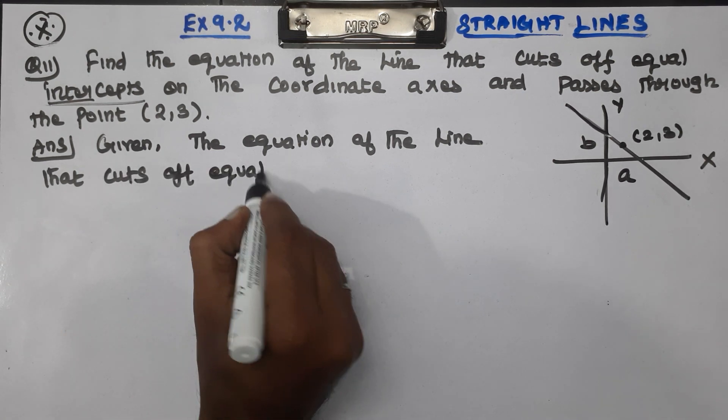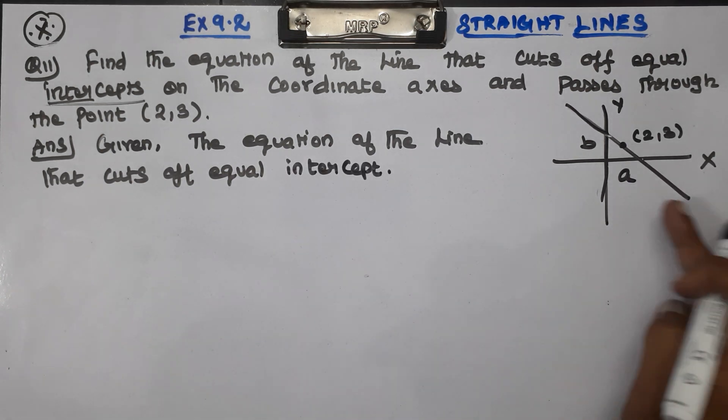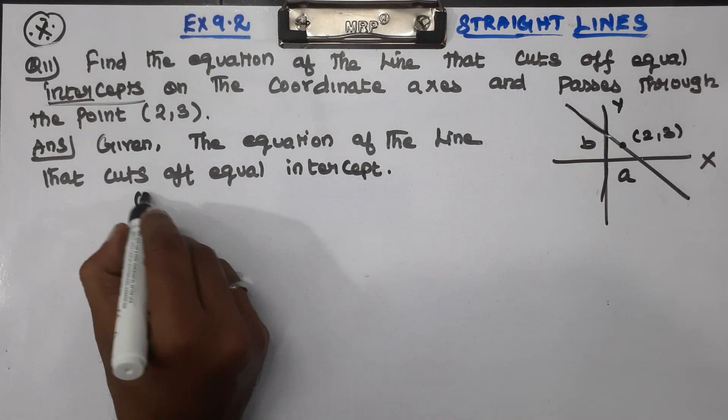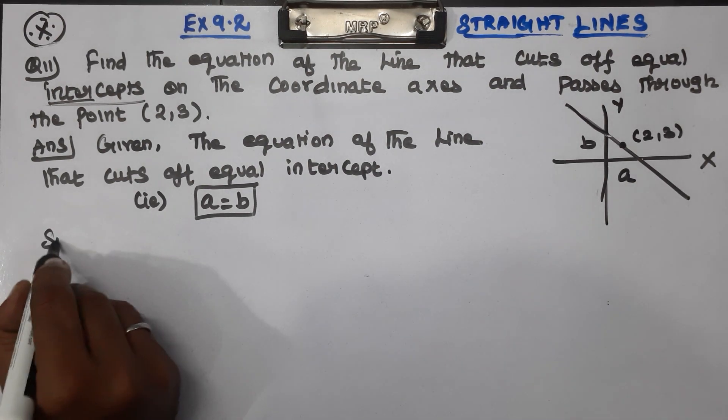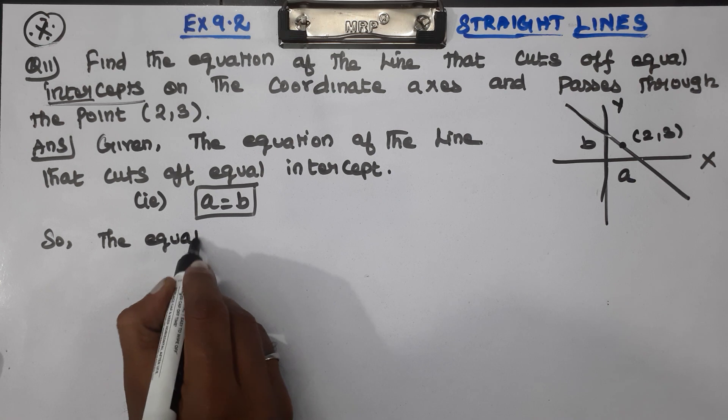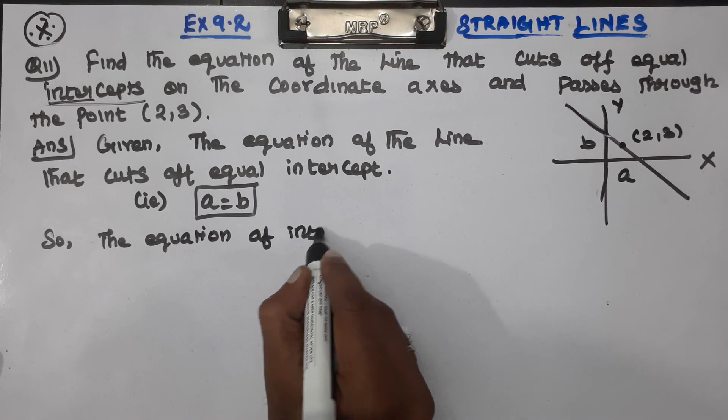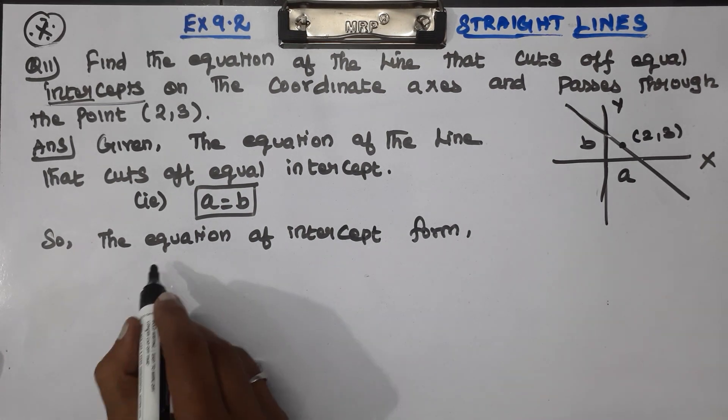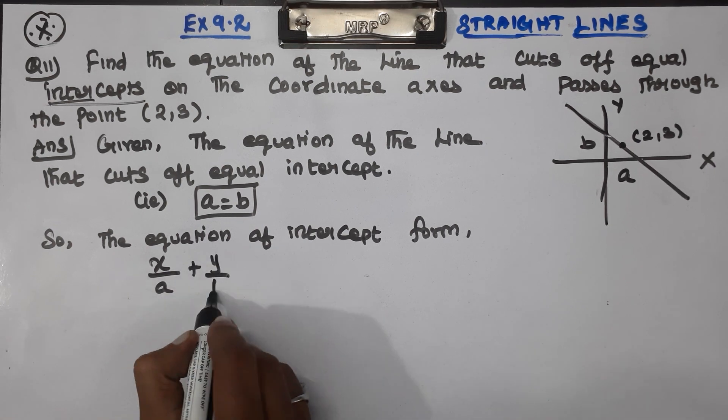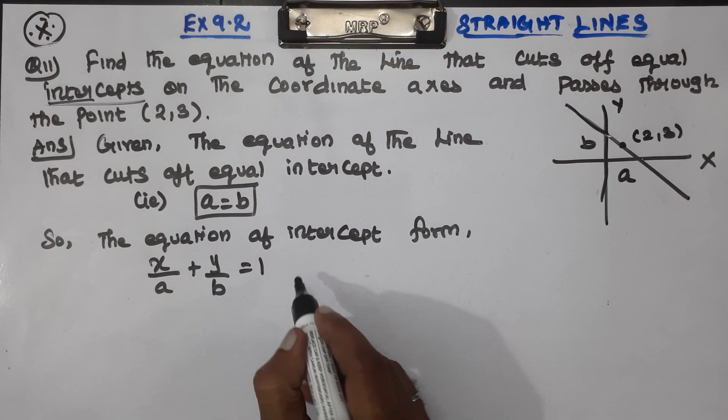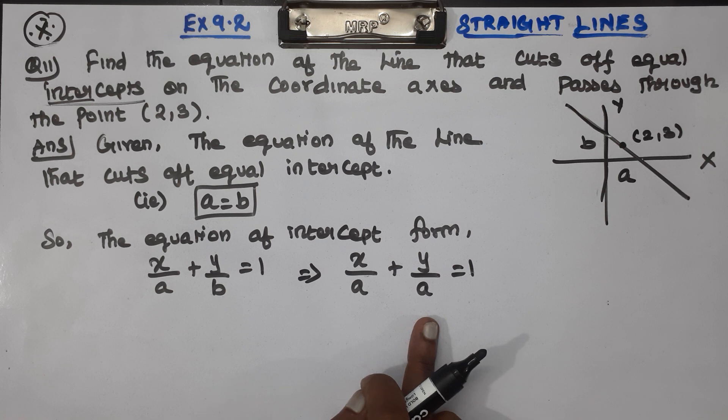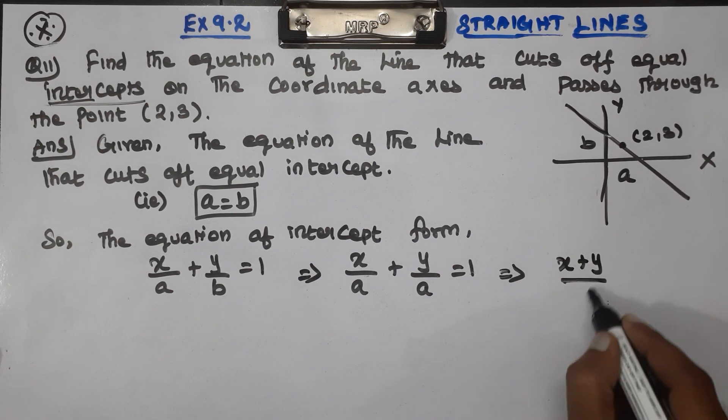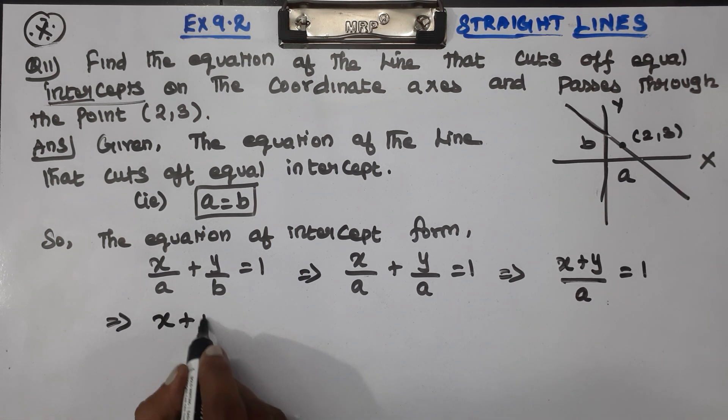Given equal intercept, the A value and B value are equal. The equation of intercept form is x/a plus y/b equal to 1. Since a equals b, we can write x/a plus y/a equal to 1. Taking LCM, (x+y)/a equal to 1, which implies x+y equal to a. This is equation number 1.